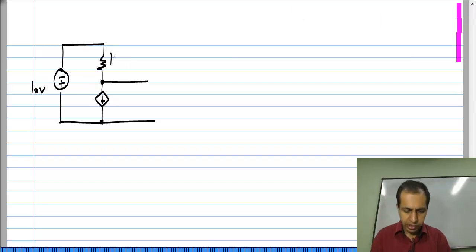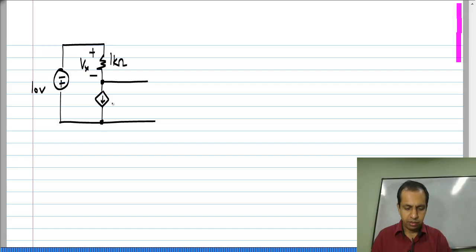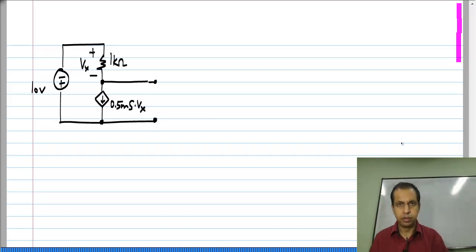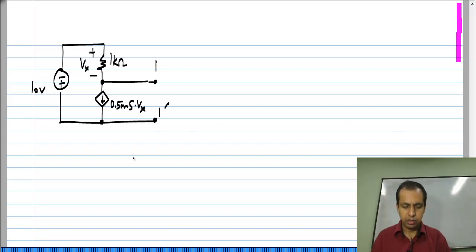This has a 1 kilo ohm resistor. I will define V_x like this, and this voltage controlled current source is 0.5 milli Siemens times V_x, between terminals 1 and 1 prime.